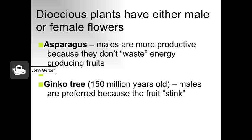In the dioecious plant, there will be either a male or female flower on separate plants. In asparagus, the males are actually more productive because they don't waste energy on producing fruits, while female asparagus plants are less productive. In the ginkgo tree, the male is also preferred because the female flowers smell pretty badly.